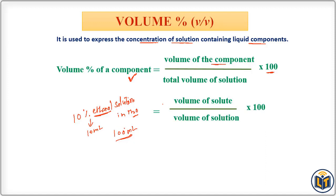The rest is water: 100 minus 10 equals 90 ml of water. This is how we can calculate the unknown volume of a component in a solution. We can also express volume percentage as: volume percentage of a component equals the volume of that component present in 100 ml of solution.